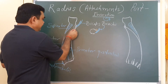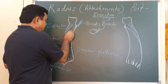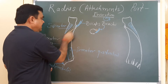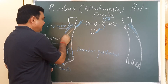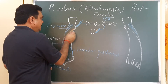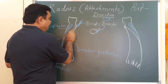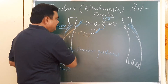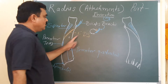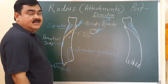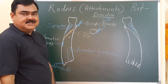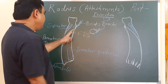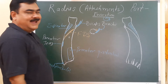Here is the anterior oblique line. Flexor digitorum superficialis takes origin from here, from the anterior oblique line.